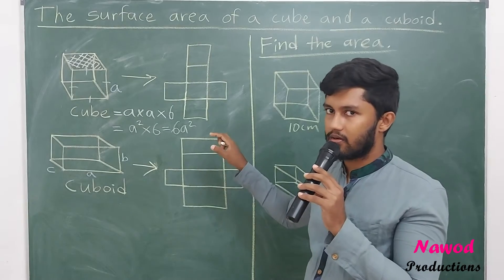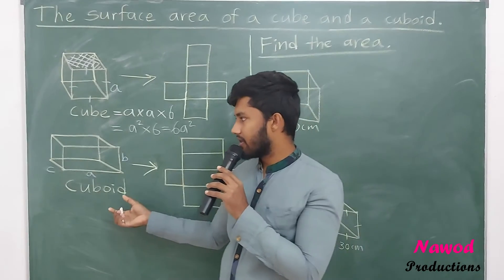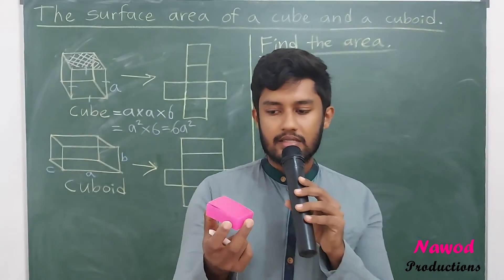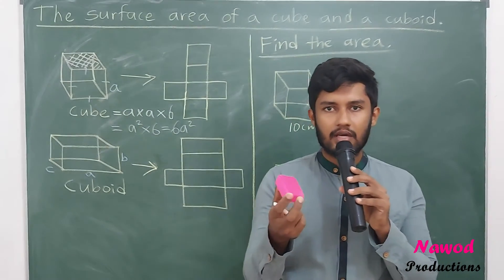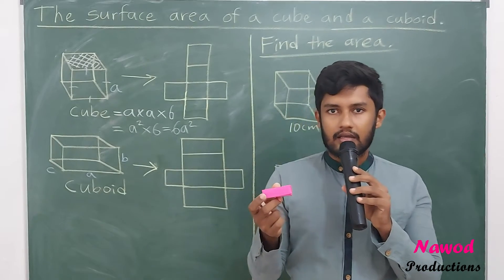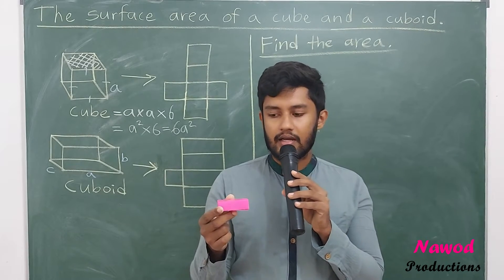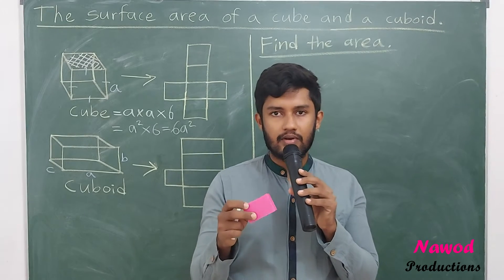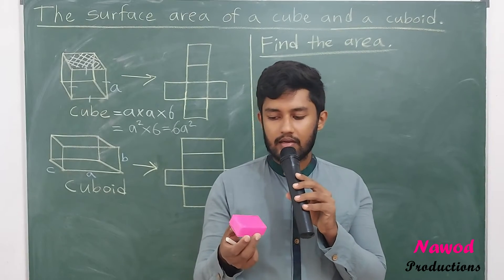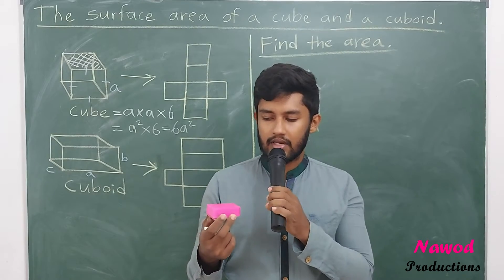When we consider a cuboid, it is somewhat different. A cuboid also has six faces — same as a cube — but it is totally different: only opposite sides are equal, not all sides.